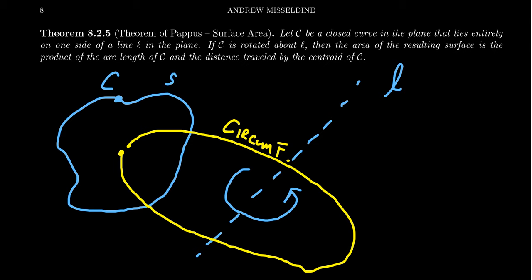We also want to consider the length of this arc C here. So you have some arc length S. What the theorem of Pappus is going to tell us is that the surface area here is going to equal the circumference of the centroid multiplied by the arc length of the curve.